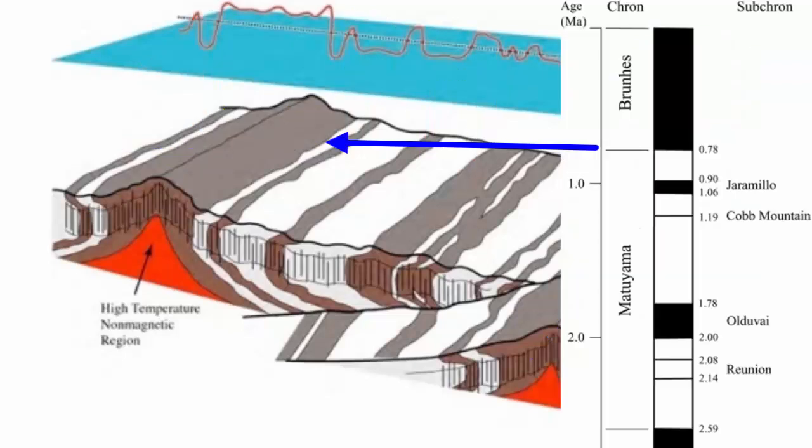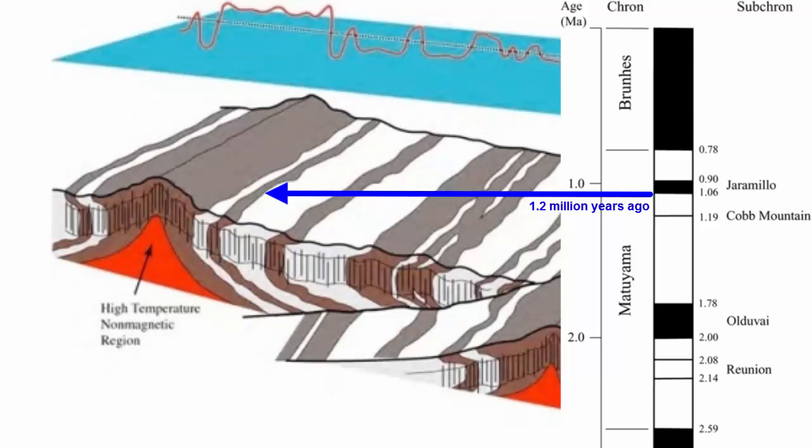For example, in this image we see that the most recent flip happened about 700,000 years ago. Before that, there was one 900,000 years ago, and another 1.2 million years ago.